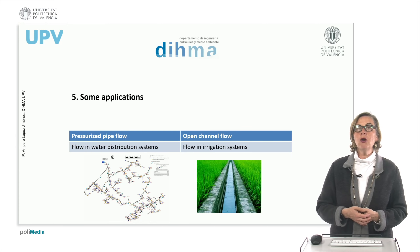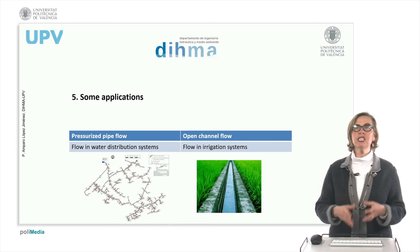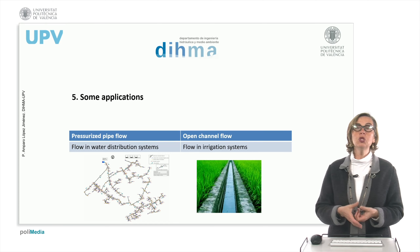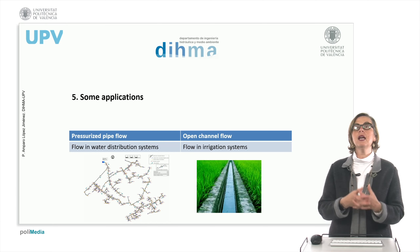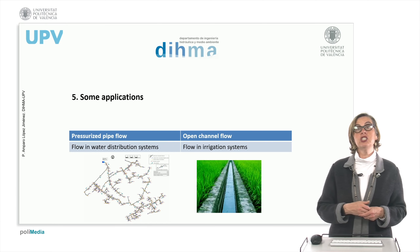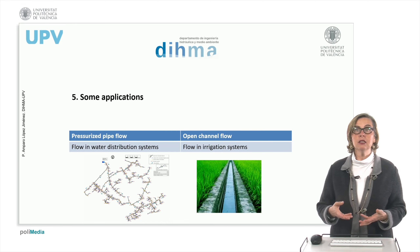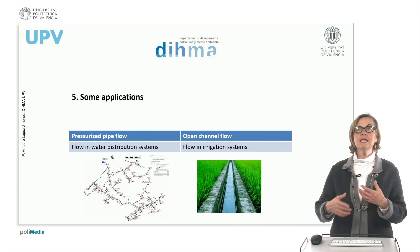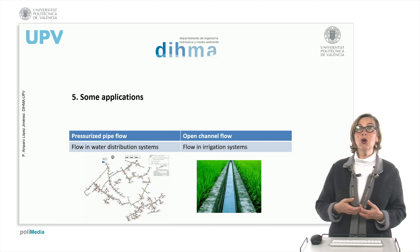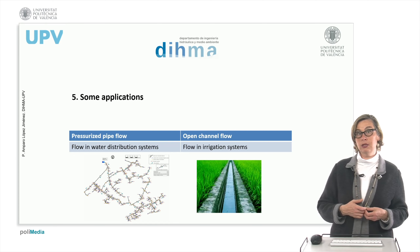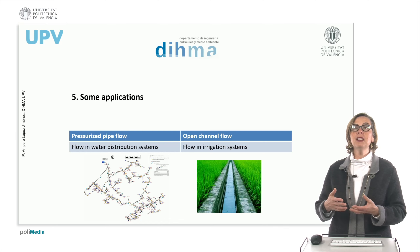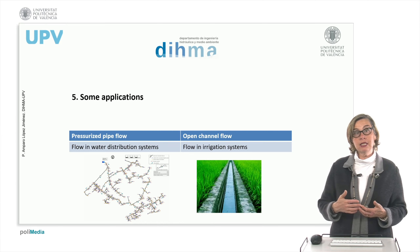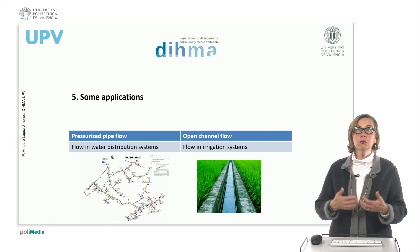Different applications can be found. For example, in water distribution systems, where pressure must be ensured under all conditions, we will normally have closed pressure pipes. In irrigation systems, sometimes we can use channels because there are not such problems of quality or pressure constraints. Open channel flow is also used in sewer systems. In industrial applications, pressure pipes are typically used. So we have different situations in which different installations can be used in different ways to move the fluid.